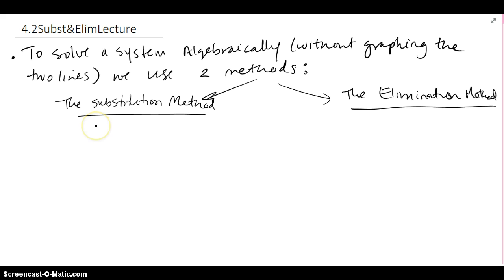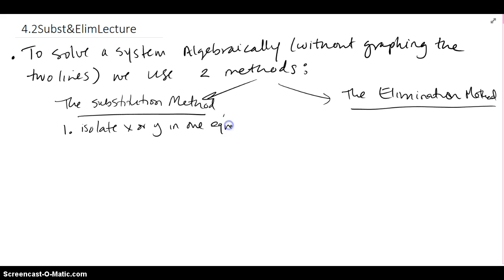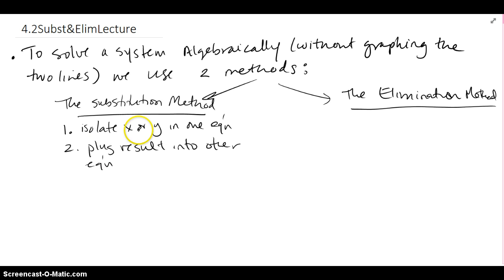One method is the substitution method, and our goal is to isolate x or y in one equation. Once we do that, we plug the result into the other equation. Since we always have two equations, we isolate x or y in whichever one is easiest, and then plug the result into the other equation.